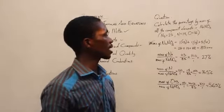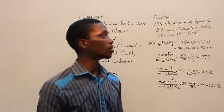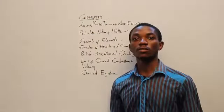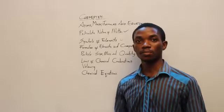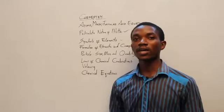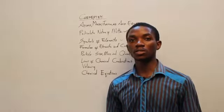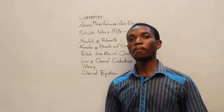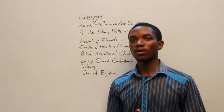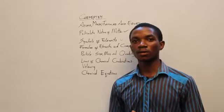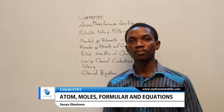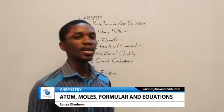This is how we go about calculating the percentage by mass of component elements of a particular compound. It's also important for us to note that there is something called the empirical formula. The empirical formula is the simplest formula that can be used to denote or represent a particular compound. The empirical formula might not be the same thing as the molecular formula. The molecular formula of a particular compound is the formula that represents the compound exactly as it actually is in real life.